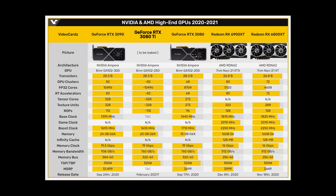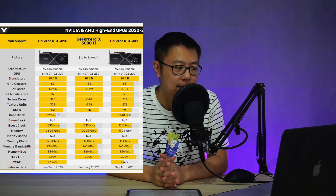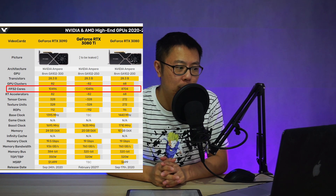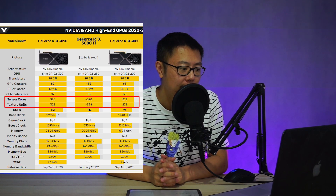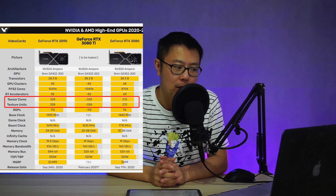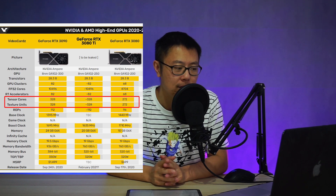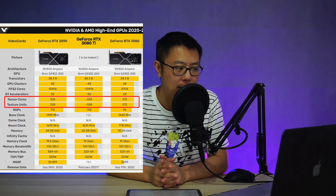Let's talk about the specs for the 3080 Ti. I've already gone through all of this before, so make sure to check out my previous videos on this and I'll leave a link in the description below. The CUDA core count is 10,496 CUDA cores, same as the 3090. It has 328 tensor cores and 328 texture units — again, the same as the 3090.